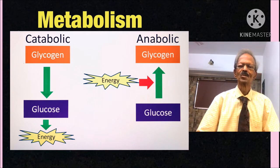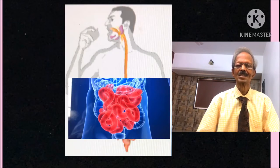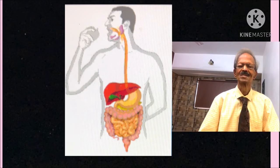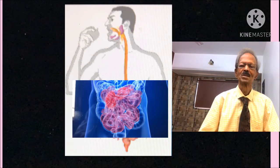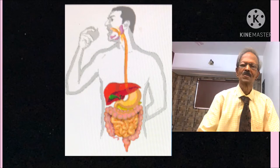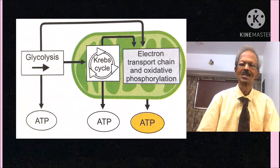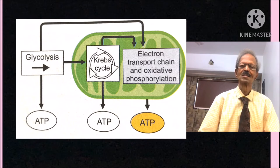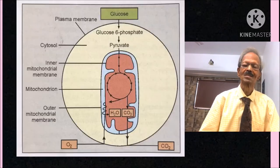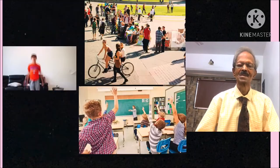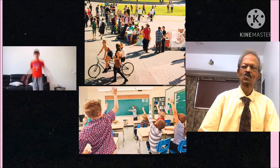Let us take the example of digestion and absorption of carbohydrates. After digestion, the main end product glucose is absorbed in the intestine and gets distributed to various organs and cells. There, by catabolic reactions, glucose molecules are converted to pyruvic acid and ATP molecules. The body uses these ATP molecules for various activities.